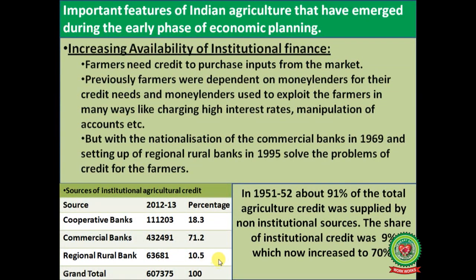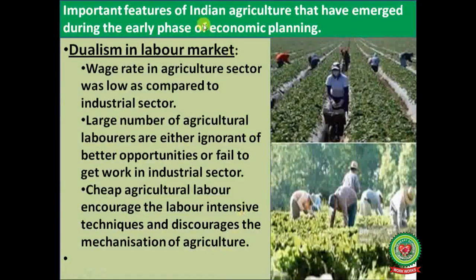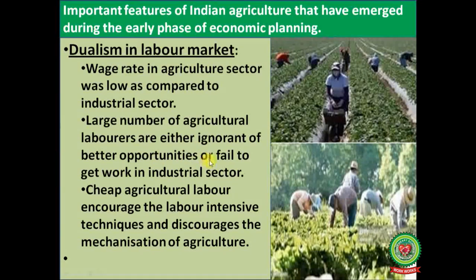Next is dualism in the labor market. Wage rates in the agriculture sector were low compared to the industrial sector. A large number of agricultural laborers are either ignorant of better opportunities or fail to get work in the industrial sector. Cheap agricultural labor encourages labor-intensive techniques and discourages mechanization of agriculture.